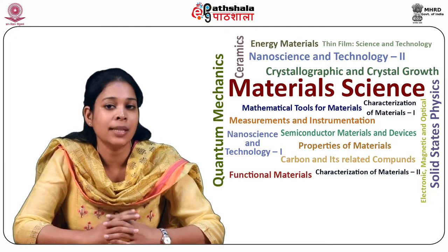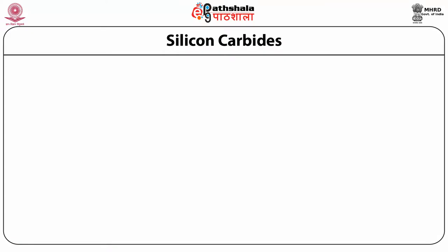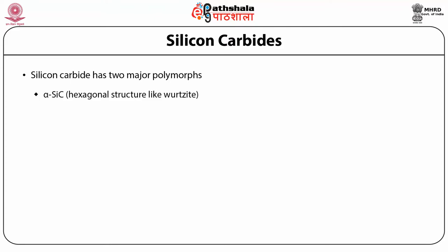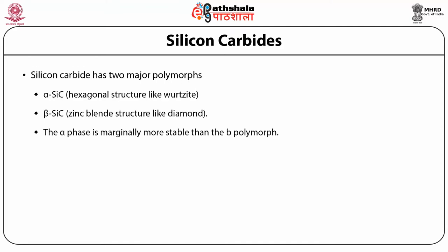Silicon Carbide for applications in refractories has already been discussed in previous modules. As mentioned there, the two major polymorphs of Silicon Carbide are Alpha Silicon Carbide, which has a hexagonal structure like wurtzite, and Beta Silicon Carbide, which has a zinc blende structure like diamond. Of the two, the alpha phase is marginally more stable than the beta polymorph.